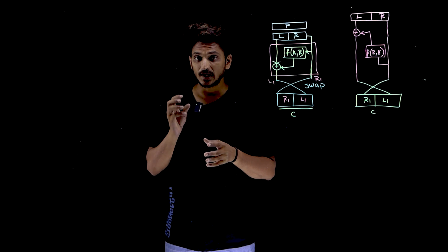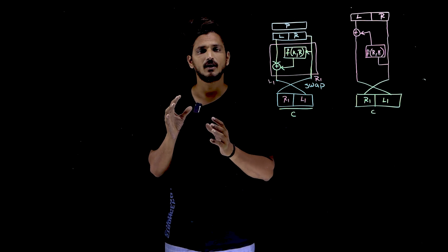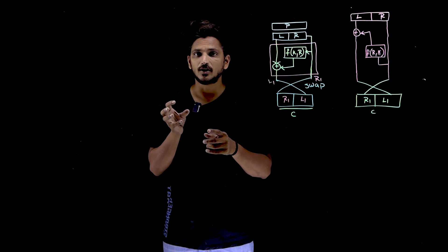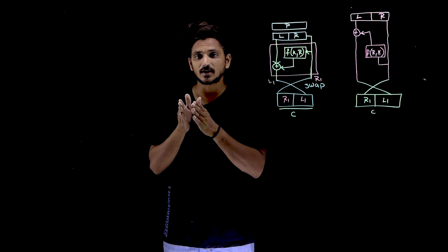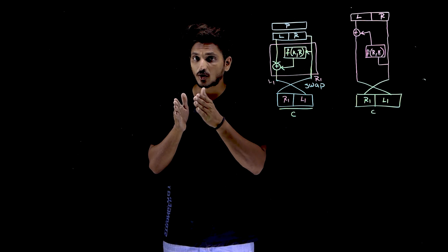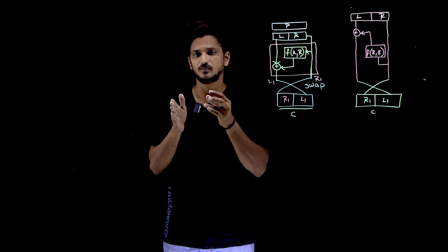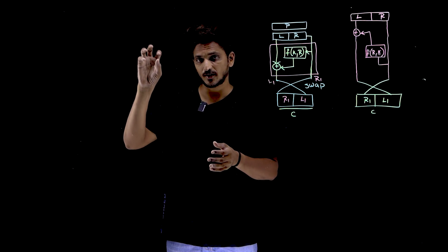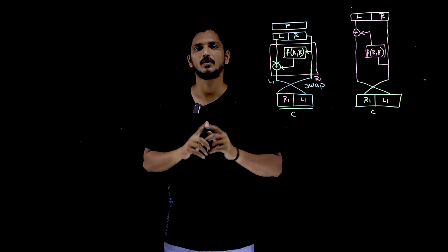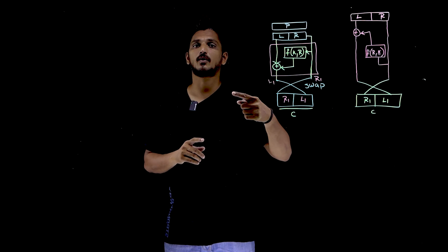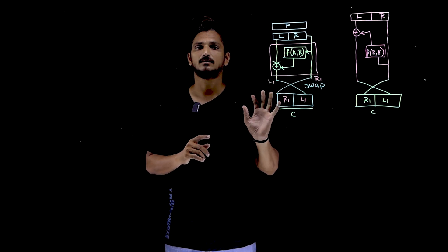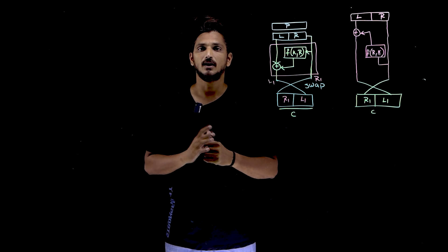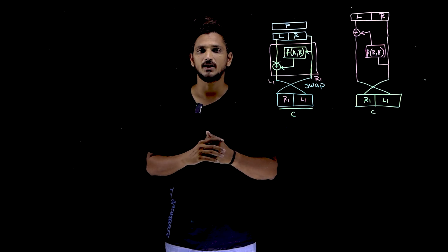In our last class, we clearly explained the concept of Feistel cipher. We discussed a point in the Feistel cipher function — you need the key value and some plaintext, or part of the plaintext, or a constant value. It should be provided during both phases: whenever you are using encryption and decryption. How it is provided will be discussed in this class. This is purely a continuation class, please watch our previous class and come back here. The link for the playlist is provided in the description below.